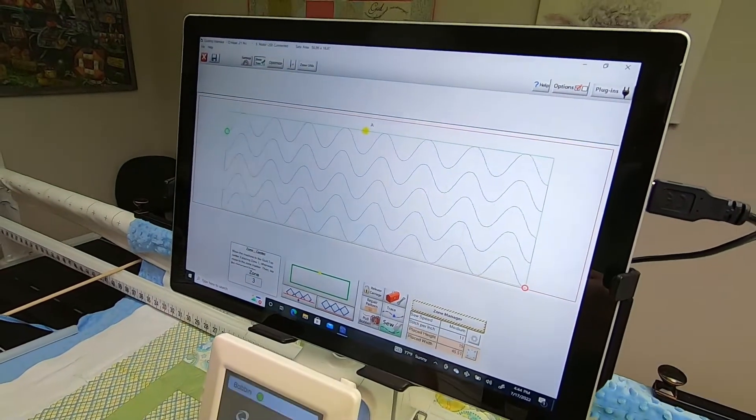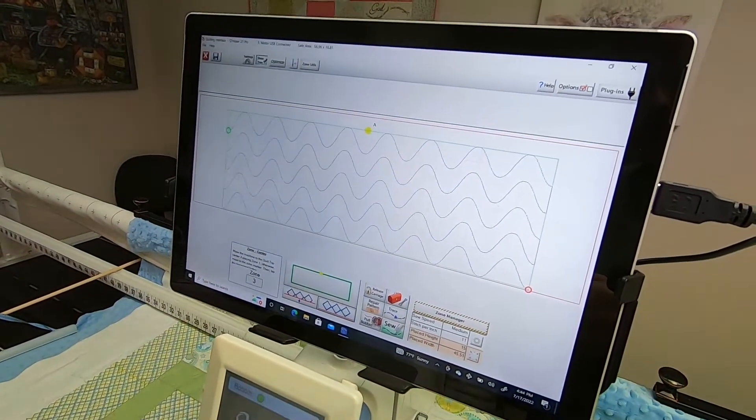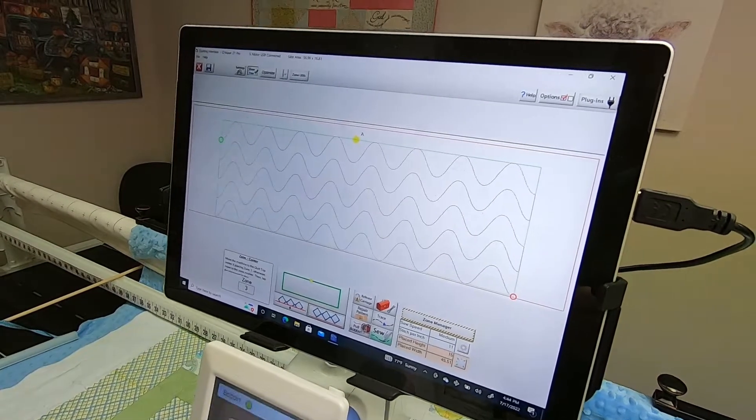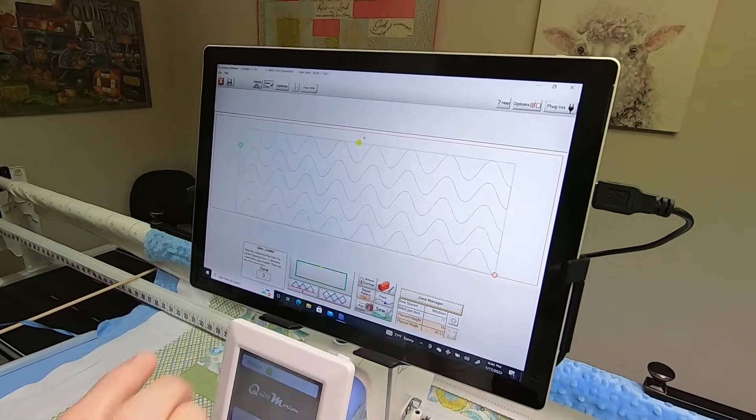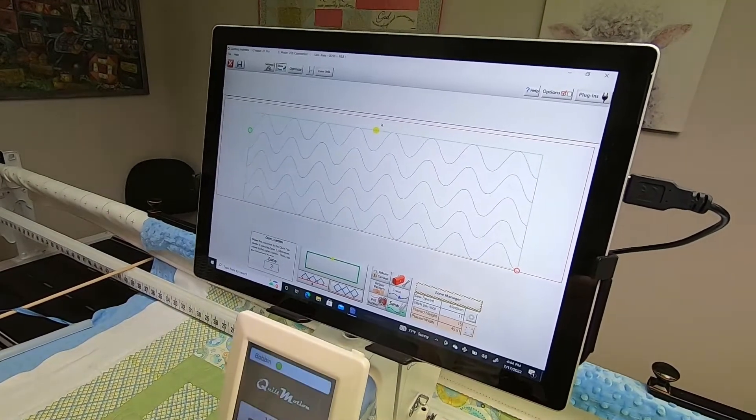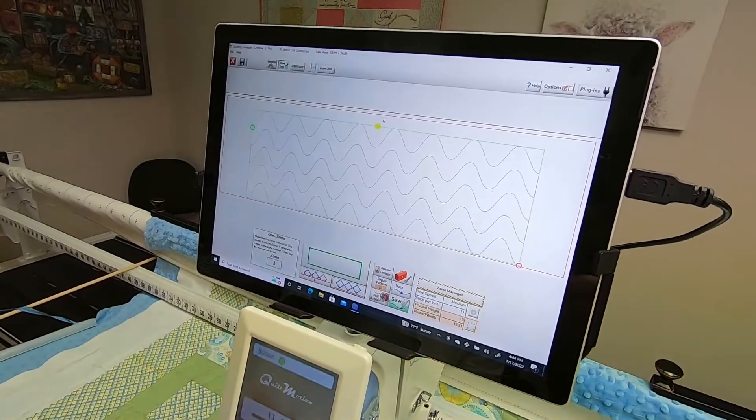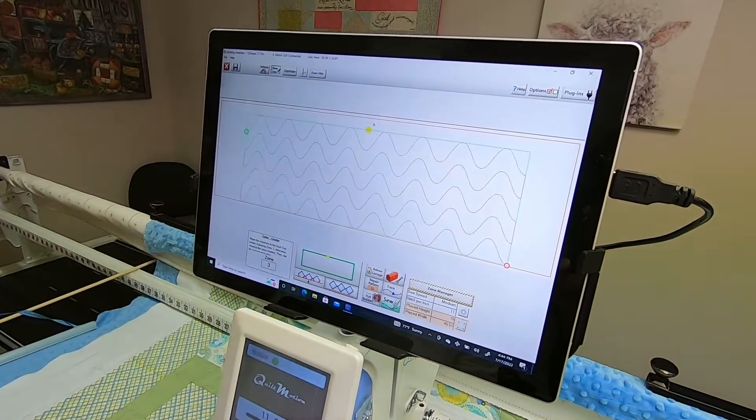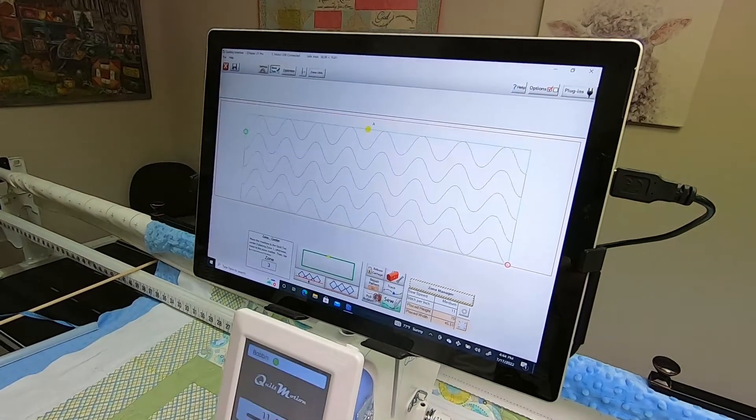So that is the feature to cut off your last zone when using center placement. That's how you would cut off the part of your pantograph that you don't want to stitch on down below the bottom edge of your quilt.